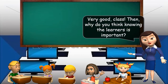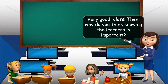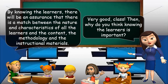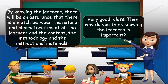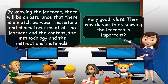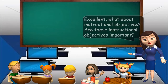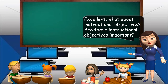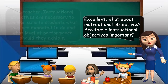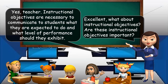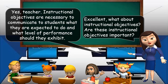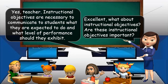In the planning phase, what should the teacher look for? The teacher should look for the learners, objectives, content, and methods, approaches, or strategies. Very good, class. Then, why do you think knowing the learners is important? By knowing the learners, there will be an assurance that there is a match between the nature and characteristics of the learners and the content, the methodology, and the instructional materials. Excellent. What about instructional objectives? Are these important? Yes, teacher. Instructional objectives are necessary to communicate to students what they are expected to do and what level of performance they should exhibit.